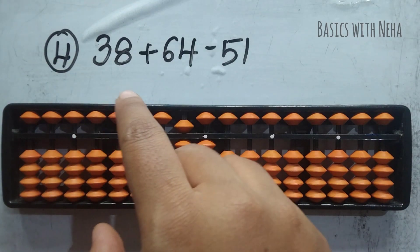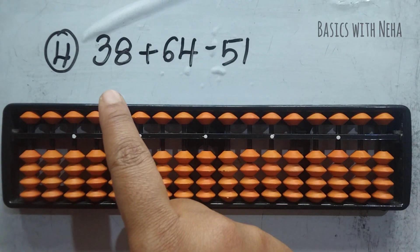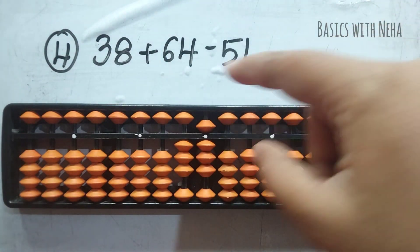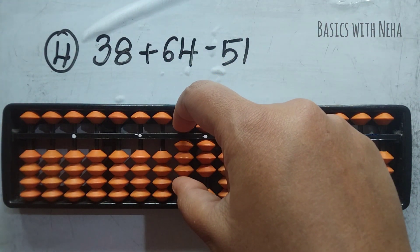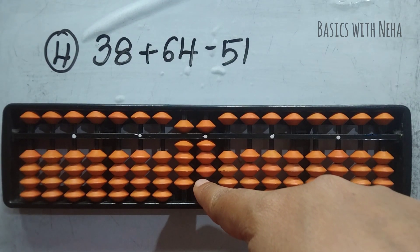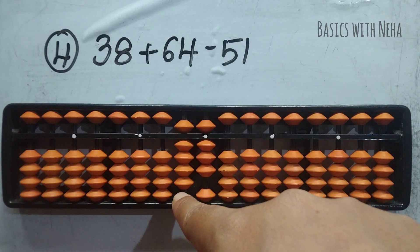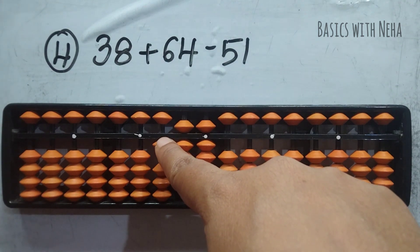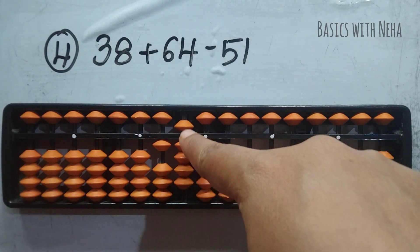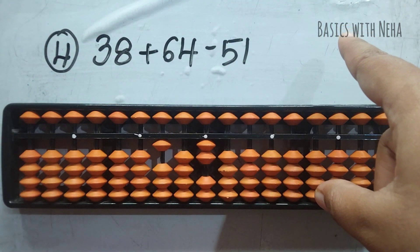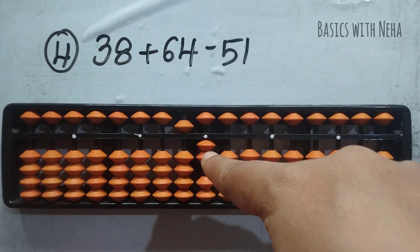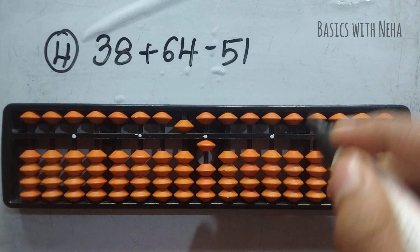Fourth question: 38 plus 64 minus 51. Take 38. Add 64 — 6 I can add directly. To add 4, beads are not available; use the big friends formula: plus 10 minus 6. Plus 10 not available here, so jump this rod and do plus 10 on the next rod, then come back and do minus 6. Remember, I have jumped this rod — remove everything from the jumped rod. Now minus 51 — to minus 5, beads are not available, so minus 10 plus 5, and minus 1 directly. My answer is 51.